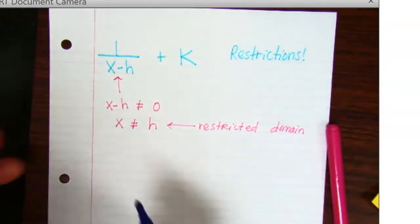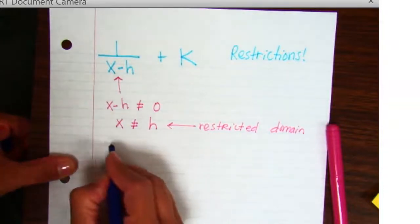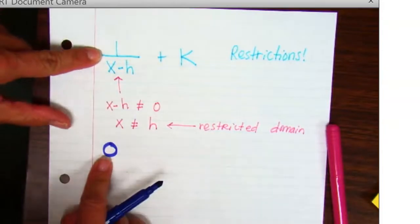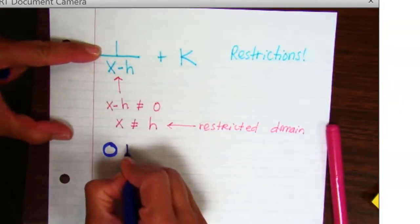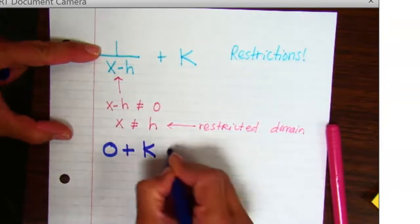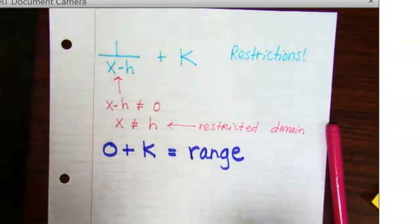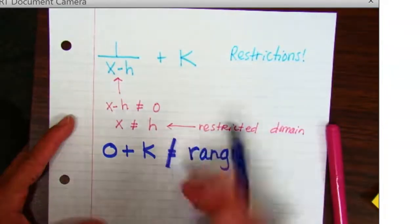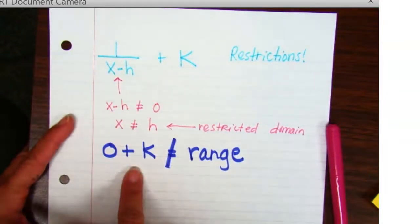So now, you are going to restrict your domain. So remember, that part right there, there's no way it can equal zero. So zero plus k is going to equal the range. Go ahead and take a look at what that is. So remember, we are solving an inequality here. So our range can never just equal the k value.